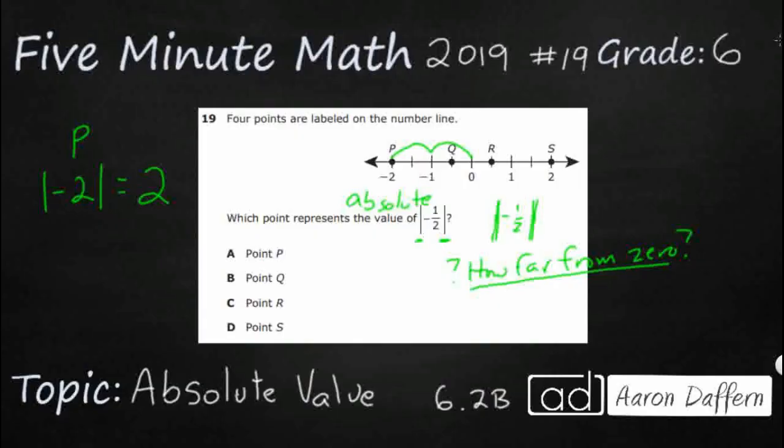Then we've got Q right there, and that is between zero and negative one. That's going to be negative one-half. Q, negative one-half. Absolute value. How far away is negative one-half from zero? It's just a half. Once again, the negative drops.